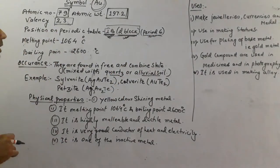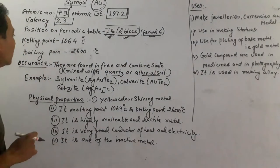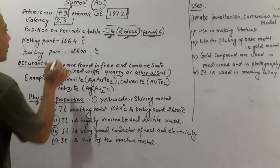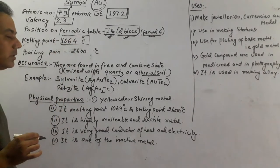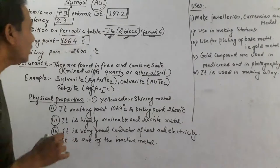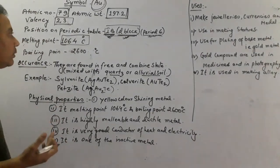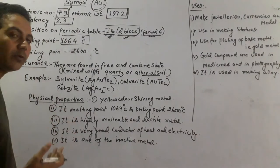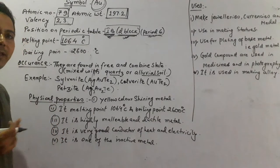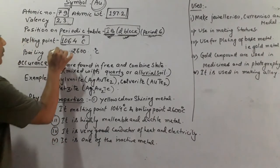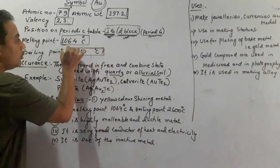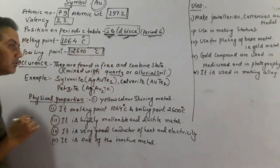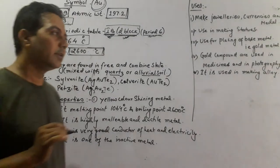If we go to the melting point, it melts at a temperature of 1064 degrees Celsius. To melt gold, we require a temperature of 1064 degrees Celsius. The boiling point is 2600 degrees Celsius. To evaporate gold, we need 2600 degree Celsius temperature.